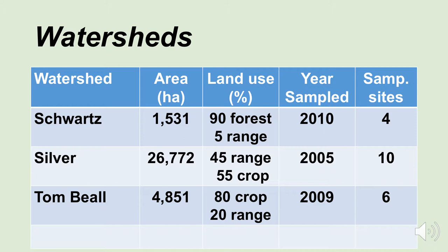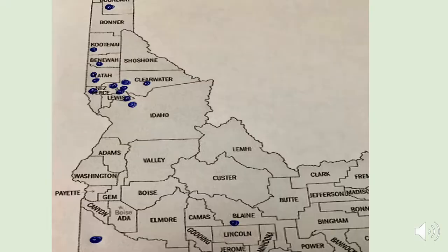So here are our 15 watersheds — you can see we had cropland, rangeland, and forest land. Looking at a map of the state of Idaho, this shows where our sampling locations were: as far north as Boundary County, a lot of sampling sites in the panhandle of Idaho, Boulder Creek in Owyhee County, and Silver Creek on the edge of Blaine County.